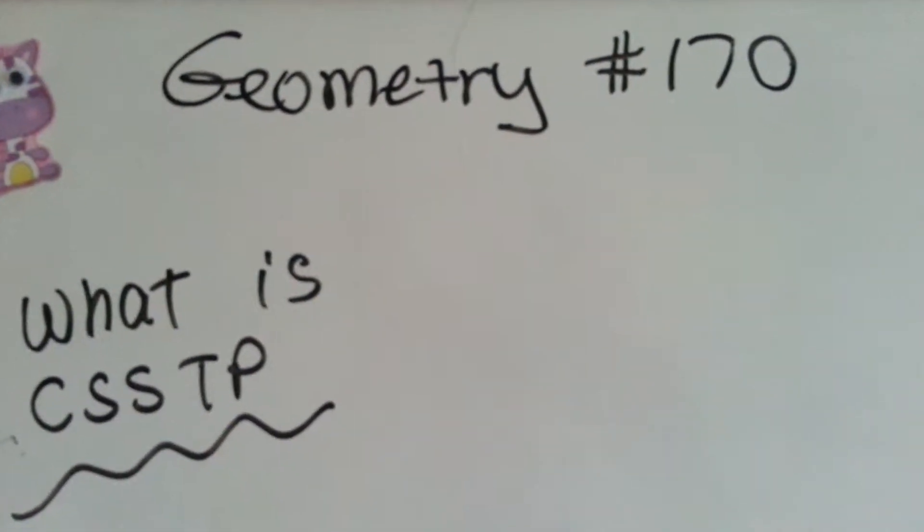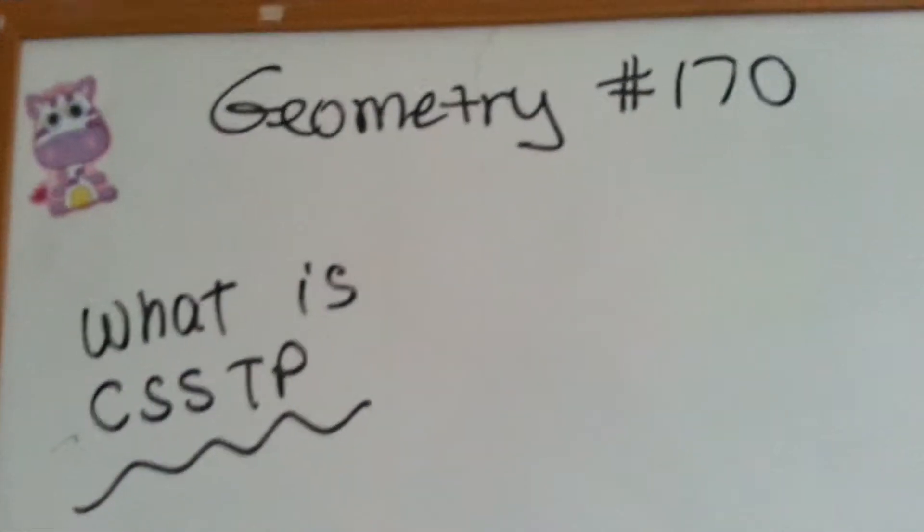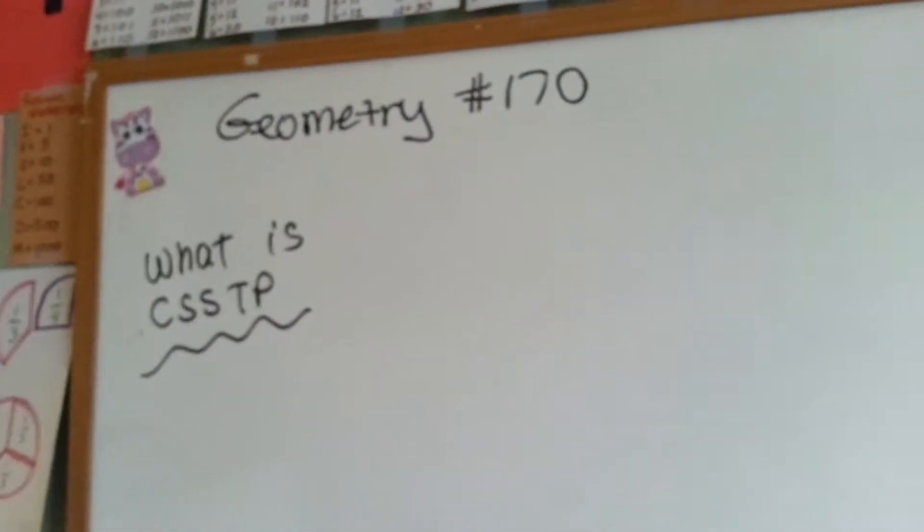Geometry number 170. What is CSSTP? What is that when you see that as the reason in a proof?